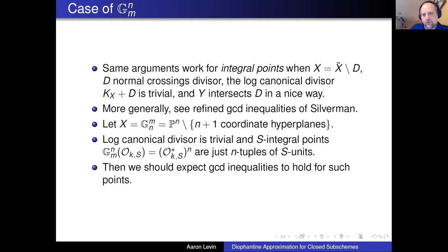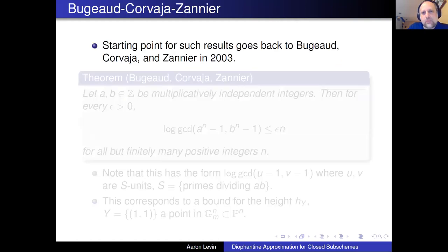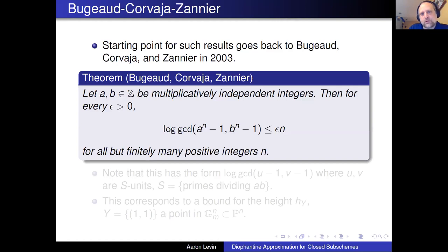Let me give the story for this setting where we can prove some things. Going a bit backwards, the starting point is a result of Bilu, Corvaja, and Zannier. They showed that if A and B are multiplicatively independent integers, then you have the following inequality for the logarithmic GCD: the GCD of A^N − 1 and B^N − 1 should be bounded by epsilon times N for all but finitely many positive integers N. This is a very nice elementary-looking inequality that has a lot of depth in its proof and the theory behind it.